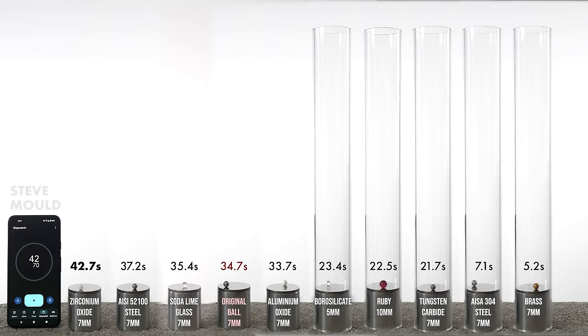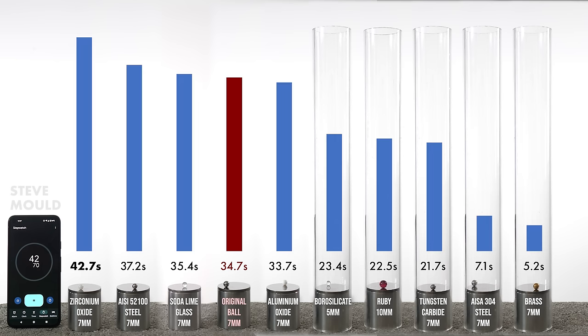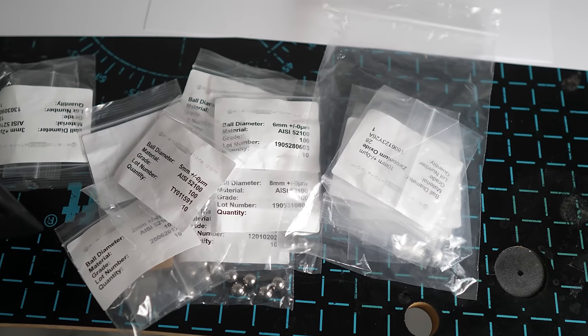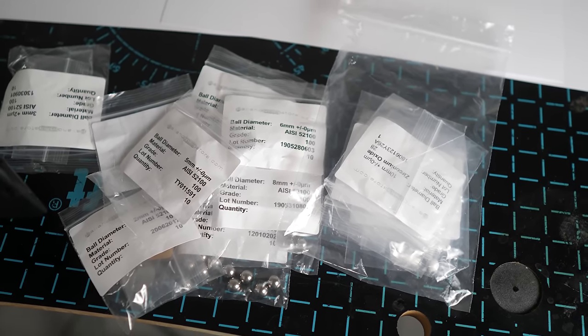So the ball bearings that outperformed the original were the sodium lime glass, the AISI-52100 steel and a type of ceramic called zirconium oxide. So armed with that information I bought even more ball bearings. Basically those ball bearings but in a few different sizes because maybe that's important. I didn't go too big or too heavy because I didn't want to risk damaging that surface especially as it's on loan.